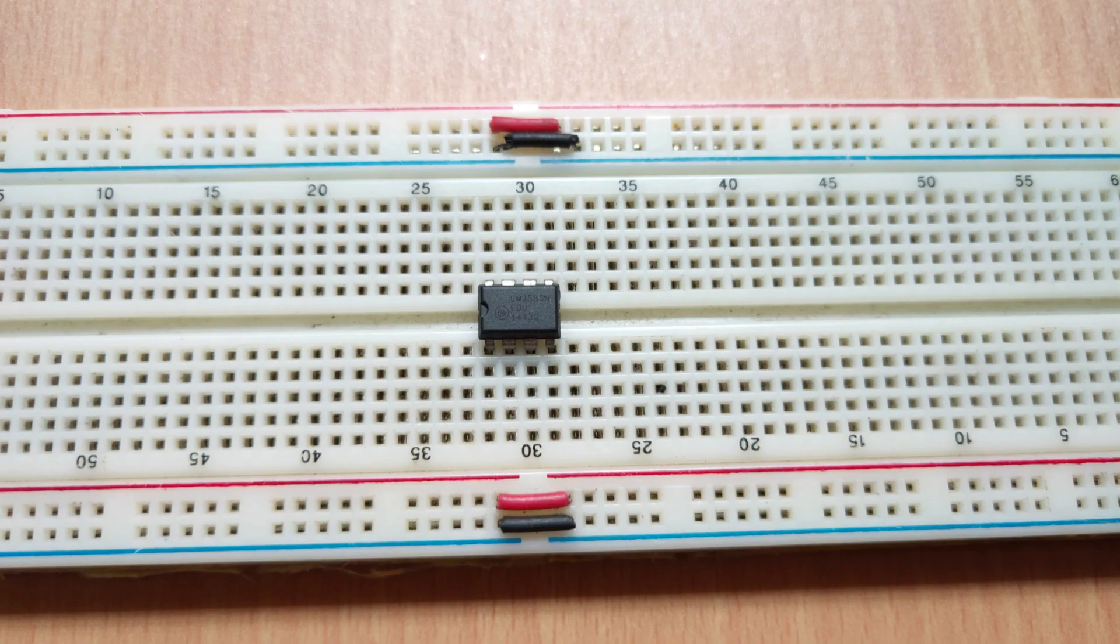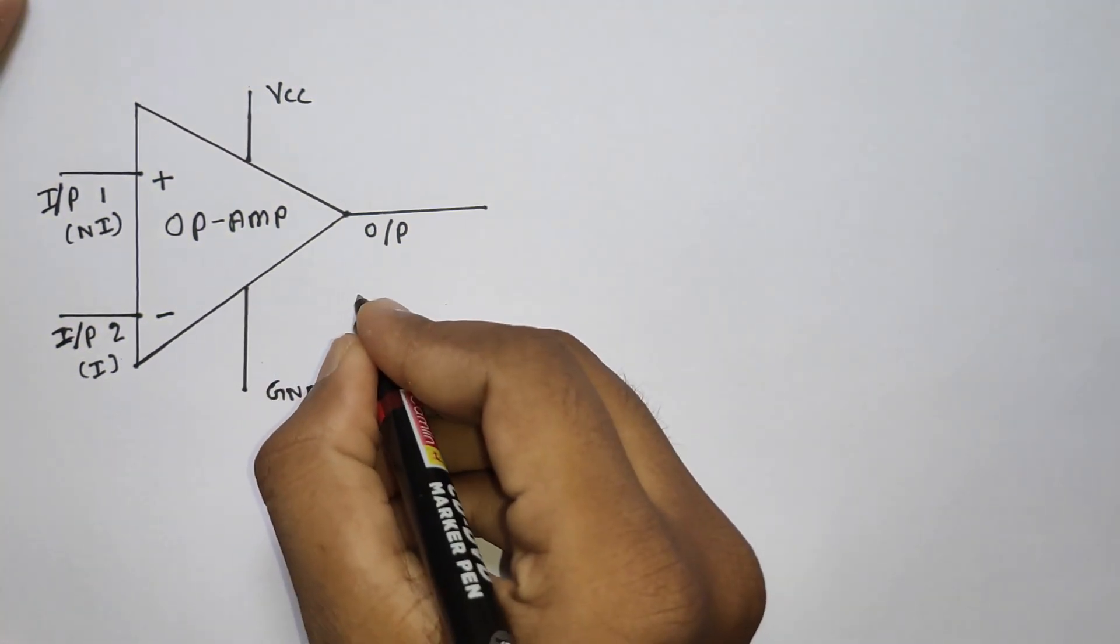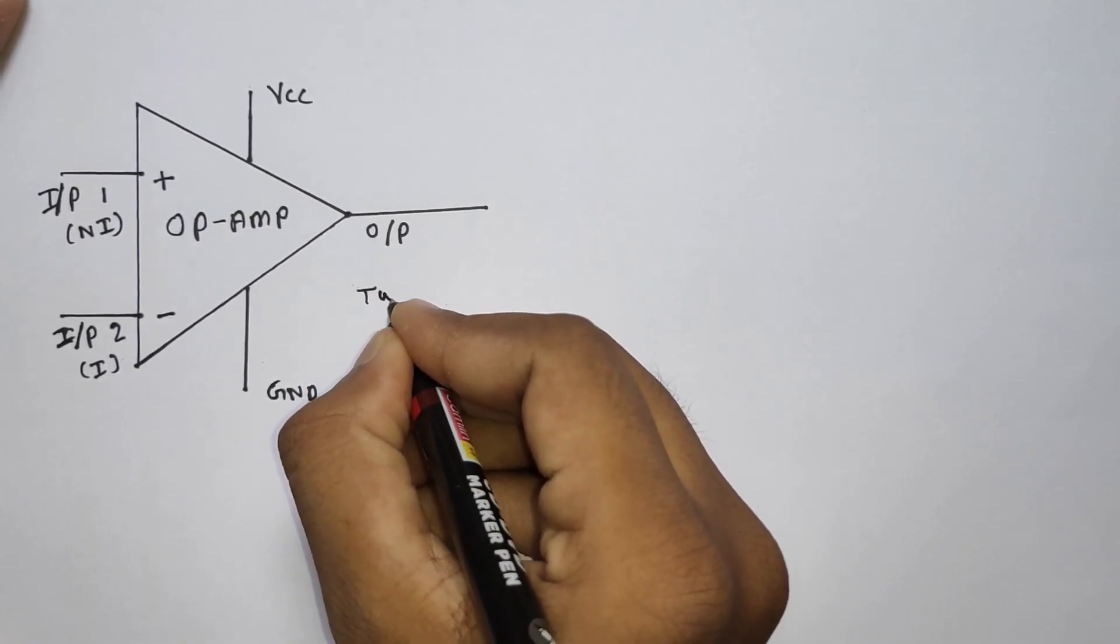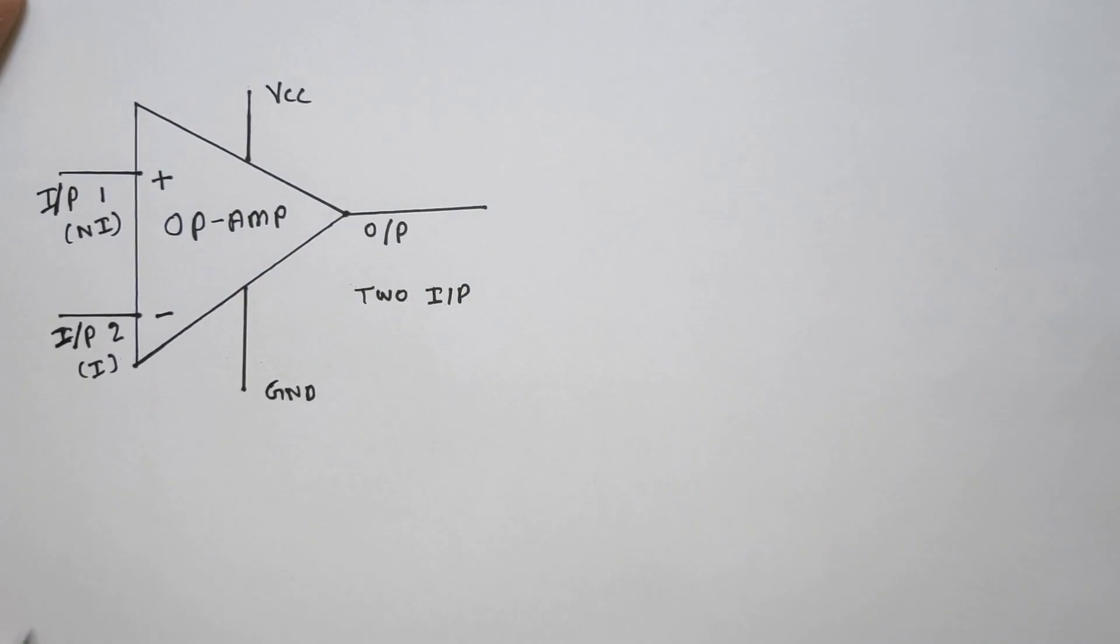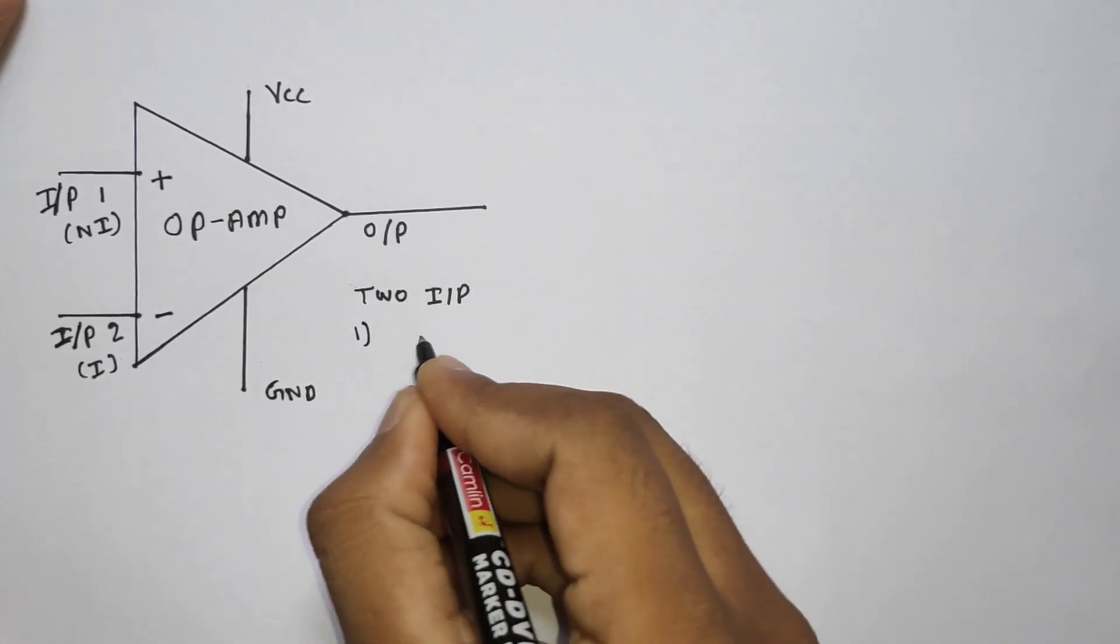We will take the LM358 op-amp as an example and see the theory inside it. We all know that op-amp has two inputs, the inverting and non-inverting. To use the op-amp as a comparator, connect it in open-loop configuration and give two inputs.